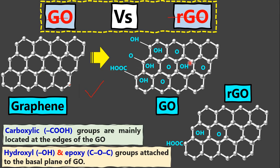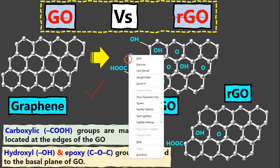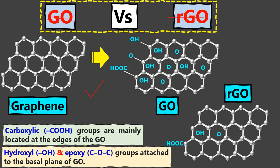If you look at graphene oxide, it has three functional groups. One is the carboxylic group (COOH), which is attached to the edge of the sheet. The other two are the hydroxyl group and the epoxy group — along with C=O — which are attached to the surface. So hydroxyl and epoxy groups are located at the surface, while the carboxylic group is located at the edge side.